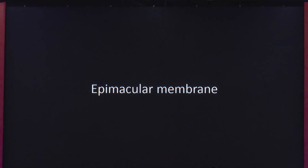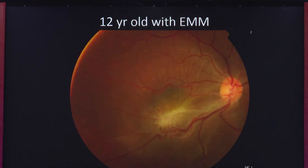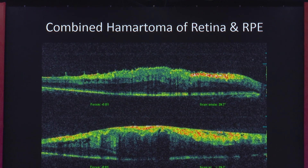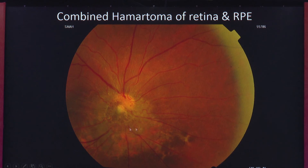Epiretinal membrane is usually a disease of the elderly, unless the patient has had trauma. When we see epiretinal membrane in a child — such as this 12-year-old — without a history of trauma or inflammation, we need to look more carefully. We are looking at a combined hamartoma of the retina and retinal pigment epithelium. You can see pincushion-like elevations on the surface of the retina — not pathognomonic, but a sign of combined hamartoma, with RPE pigmentation and gliosis involving the retina and pre-retinal space. Visual prognosis is not great in these patients.